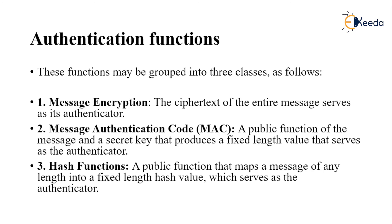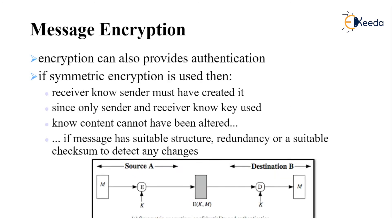Message encryption also provides authentication. If symmetric encryption is used, the sender and receiver use the same key for encryption and decryption purposes — only they know what key they are using. They know the content cannot have been altered, and if the message has a suitable structure, redundancy, or a suitable checksum to detect any changes. This is the diagrammatic representation of message encryption in symmetric encryption, wherein a message is encrypted by a key — computed as E_K(M) — which is then received at destination B and decrypted using the same key to recover the plaintext.